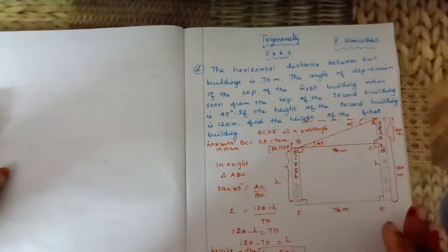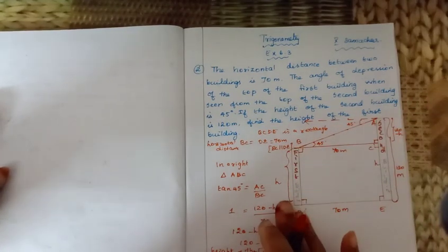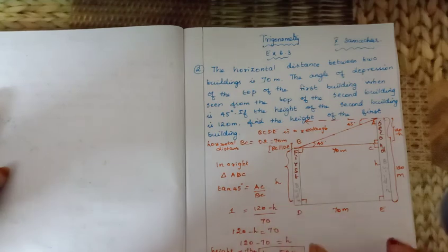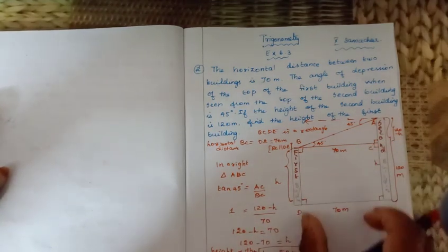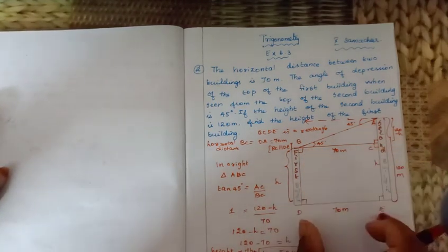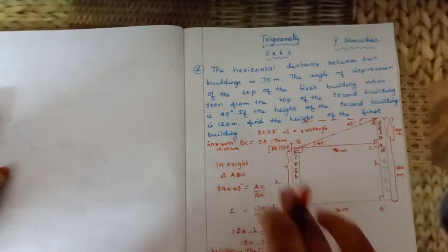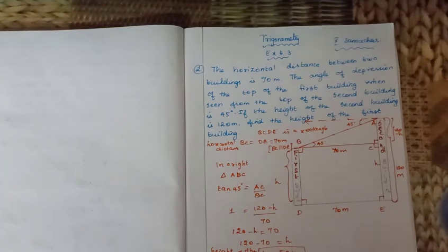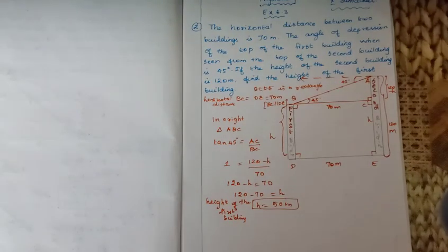The height of the first building h is equal to 50 meters. Note that BC equals DE — this is clearly shown in the figure. Thank you students, prepare well for your board examination. Please subscribe to my channel.